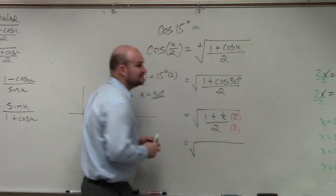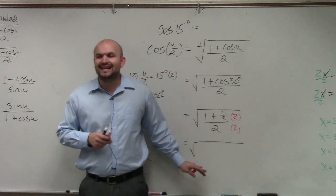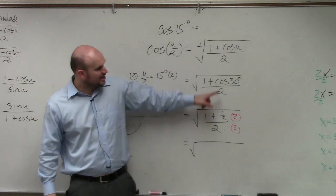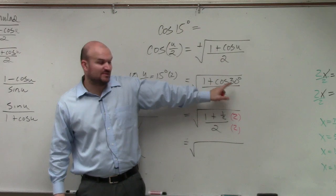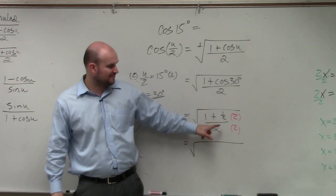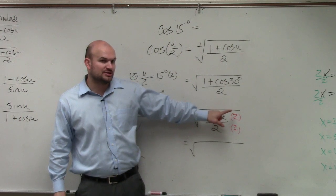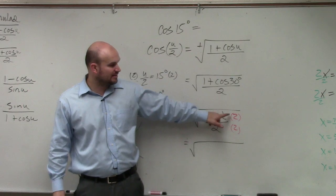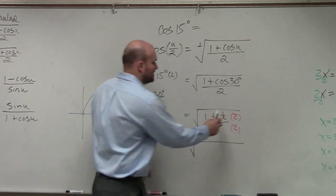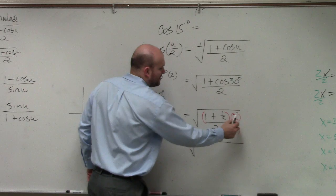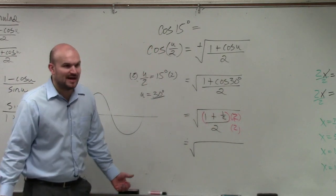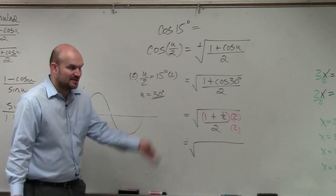I still have plenty of time, ladies and gentlemen. So the cosine of 30 degrees you guys should be familiar with is 1 half. Now, what I'm going to want to do is get rid of my fraction, so I'm going to multiply by 2 over 2. Because what happens is when you multiply by 2 over 1 times 1 half, the 2 in the denominator divides out.